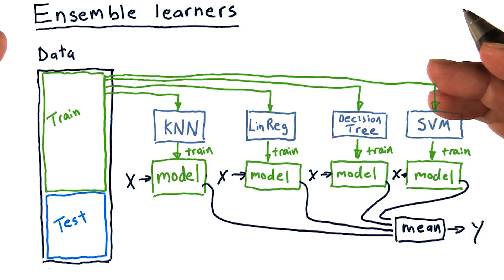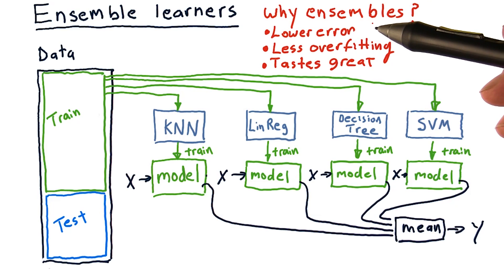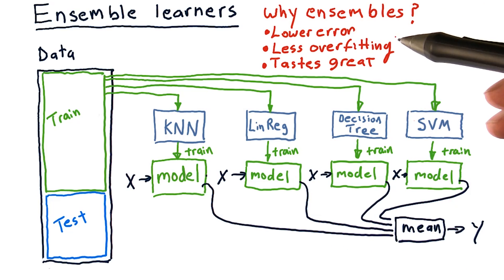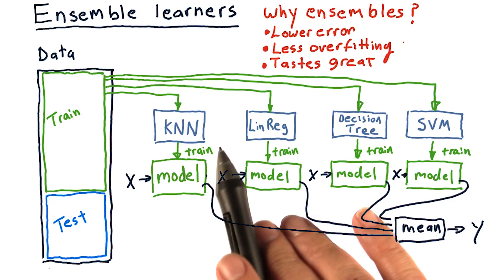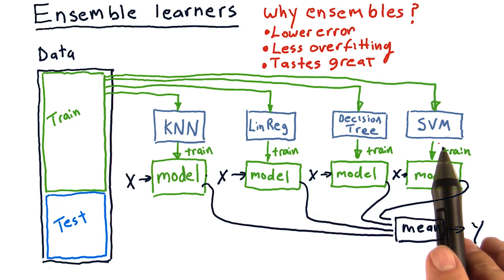We can then test this overall ensemble learner using this test data that we set aside. Why ensembles? Why do we use them? Why might they be better? Well, there's a few reasons. First of all, ensembles often have lower error than any individual method by themselves. Ensemble learners offer less overfitting. The ensemble of learners typically does not overfit as much as any individual learner by itself.